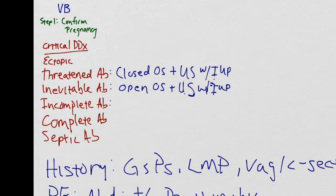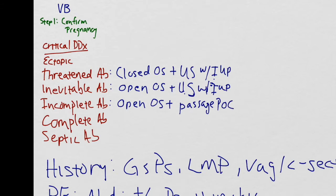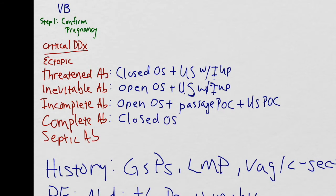In an incomplete abortion, the OS will again be open. There may have been some passage of products of conception, and on ultrasound there will be the presence of retained products. In a complete abortion, all the products have passed and the OS will be closed, so on ultrasound there will be no retained products of conception.